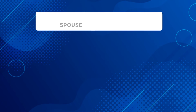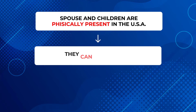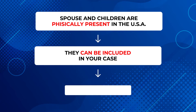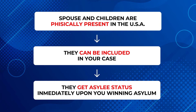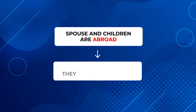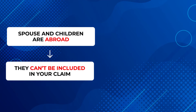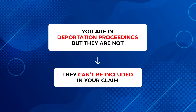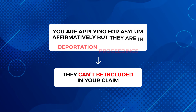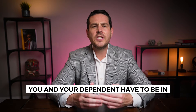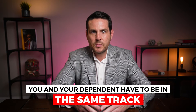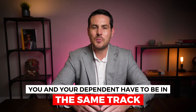We need to talk about an important distinction that's made between family members who are already in the United States and those who are not. If your spouse and children are physically present in the United States, then they can be included in your case, and if they are, they'll get asylee status immediately upon you as the principal applicant winning asylum. But if they're abroad, they cannot be included in your claim. They likewise cannot be included in your claim if you are in deportation proceedings but they are not, or if you are applying for asylum affirmatively with USCIS but your family members are in deportation proceedings. So you have to be on the same track — either you must both be in deportation proceedings, or you must both not be in deportation proceedings.